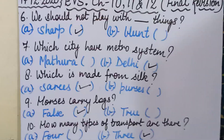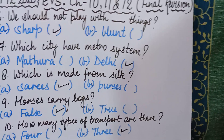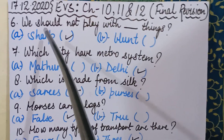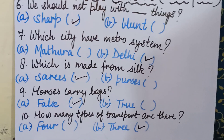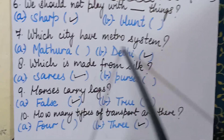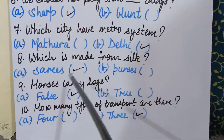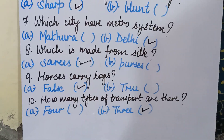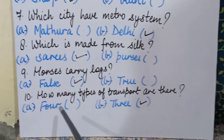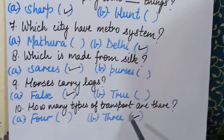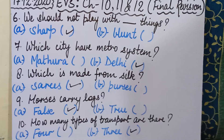I hope you have all understood questions six to ten. Repeating: Question 6 — don't play with sharp things. Question 7 — Delhi has metro system. Question 8 — saris are made from silk. Question 9 — horses carry logs is false. Question 10 — there are three types of transport. I hope all ten sentences are clear to you all.